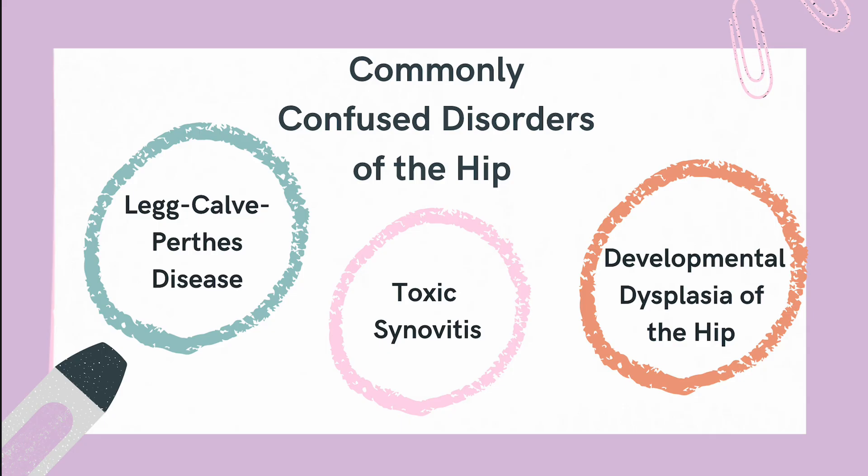Legg-Calvé-Perthes disease is caused by temporary loss of blood supply to the femoral head, leading to bone tissue death. Symptoms include hip pain, stiffness, a limp, and reduced range of motion. This condition requires a referral to orthopedics for treatment, which may include rest, physical therapy, or even surgery.